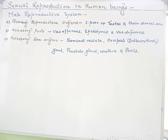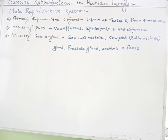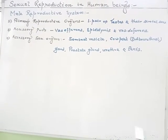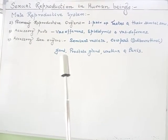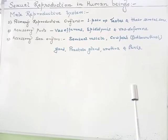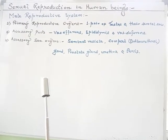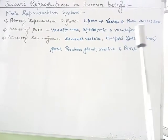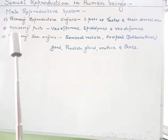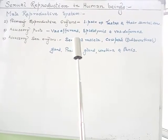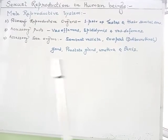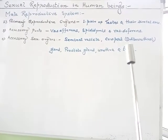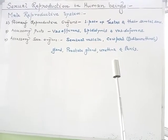Now we'll discuss the male reproductive system. The reproductive organs comprise primary reproductive organs, accessory ducts, and accessory sex organs. The primary reproductive organs include a pair of testes and their scrotal sacs. Accessory ducts include vas efferens, epididymis, and vas deferens. Accessory sex organs include seminal vesicles, Cowper's or bulbourethral glands, prostate glands, urethra, and penis.